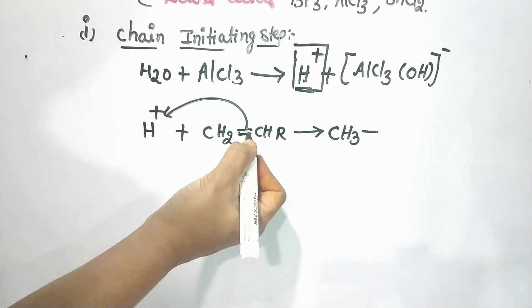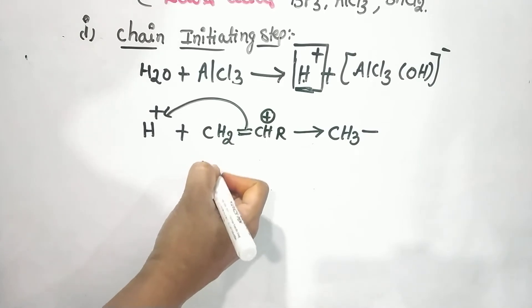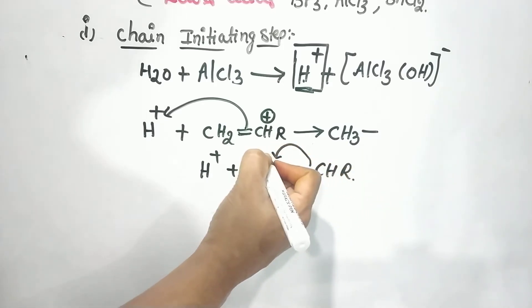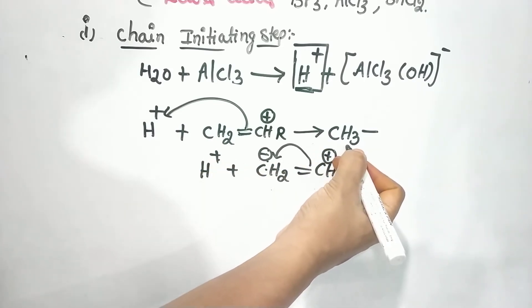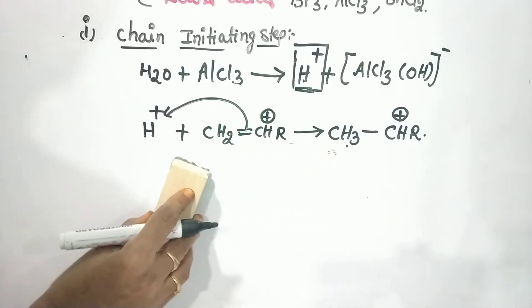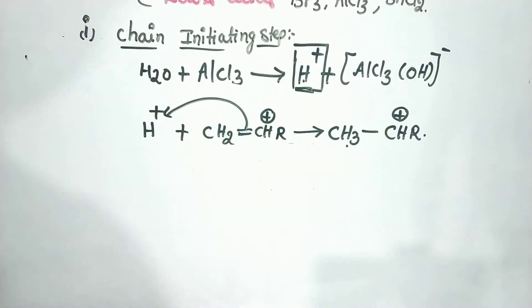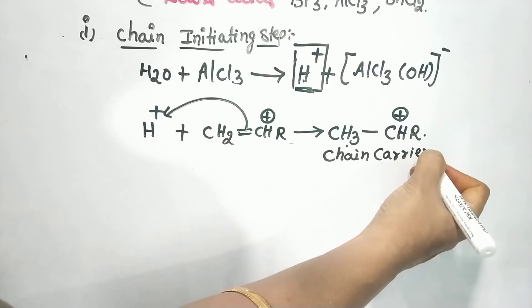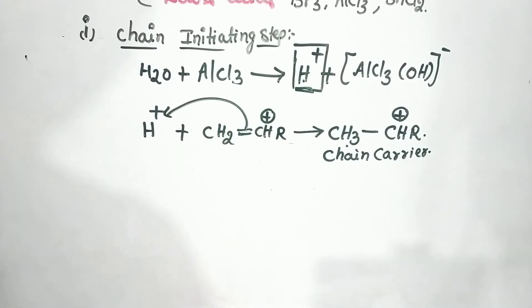Here we have CH₃ with a positive charge, and here is an electron and a deep charge. H⁺ reacts with CH₂CHR — here is an electron, a minus charge, and a plus charge — giving minus plus combined, forming CH₃⁺CHR. This is the chain initiating step, and this species is the chain carrier.